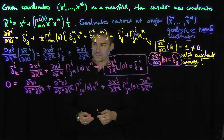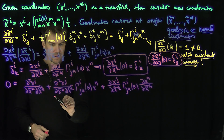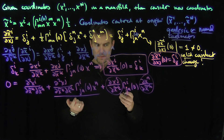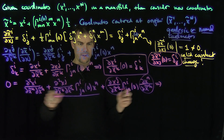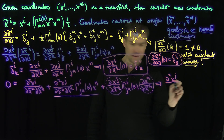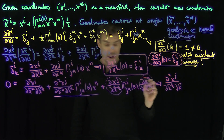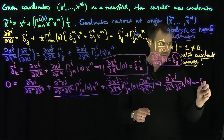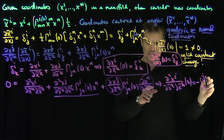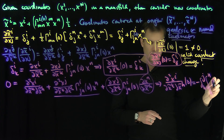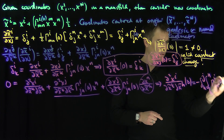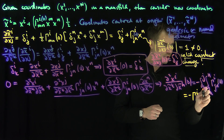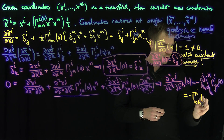Now let's find the second derivative at the origin. Plugging in the origin: the first extra term vanishes since x_n goes to zero, the partial x_j over partial x_tilde_k becomes delta_jk, and partial x_n over partial x_tilde_h becomes delta_nh. Isolating, I get: partial squared x_i over partial x_tilde_k partial x_tilde_h at the origin equals negative gamma_i_kh at the origin — the j's turn into k's and the n's turn into h's.